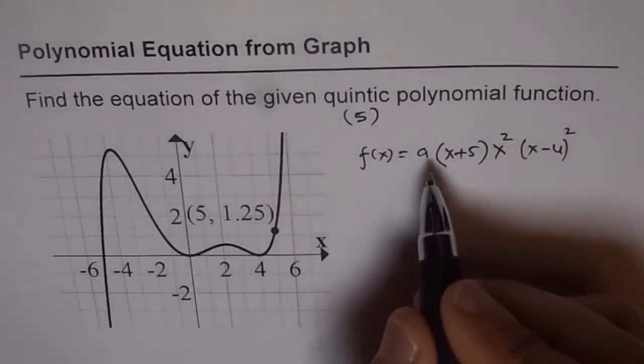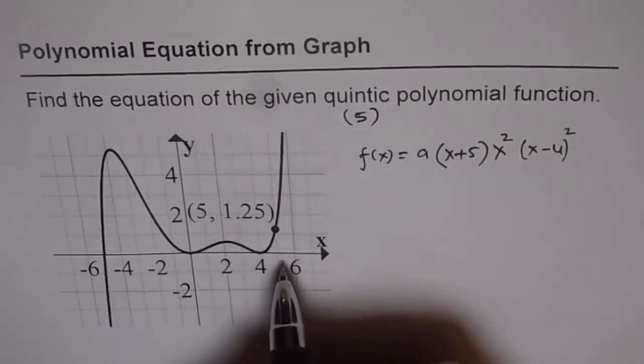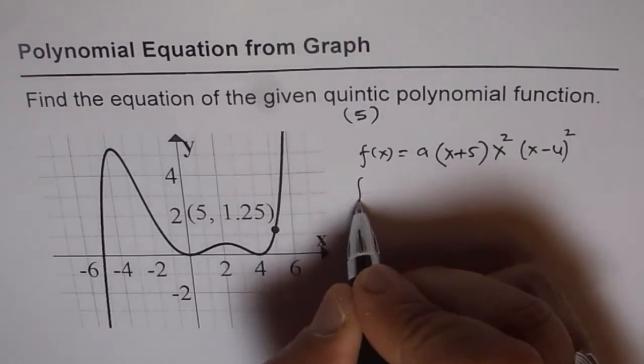Now to find the value of a we are already given a point here and this point is that at x equals to 5, y value is 1.25. So we have x equals to 5.